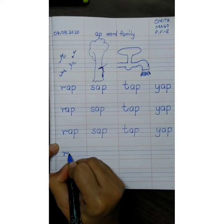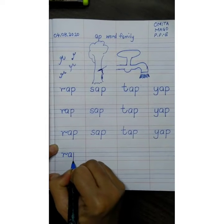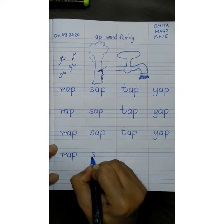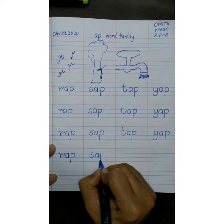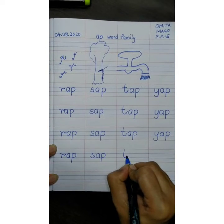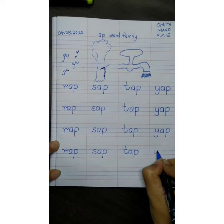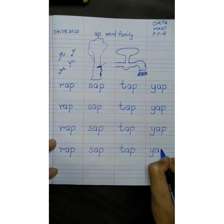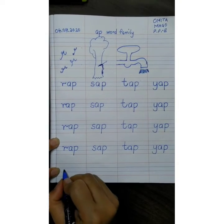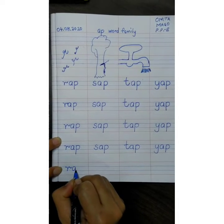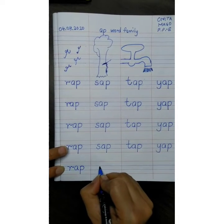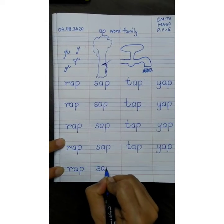Read it again one more time. R, ap, rap. Ser, ap, sap. Ter, ap, tap. Yer, ap, yap. And the last time R, ap, rap. Ser, ap, sap.